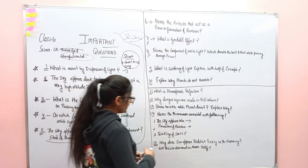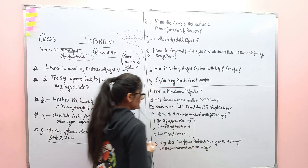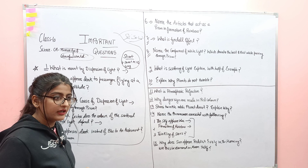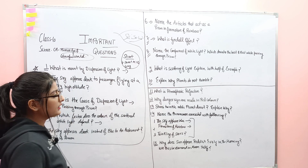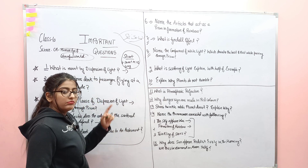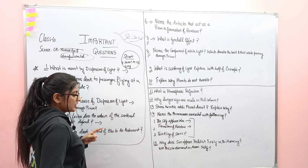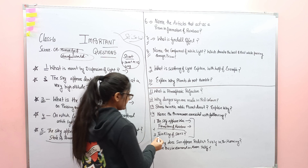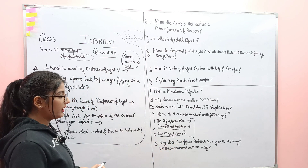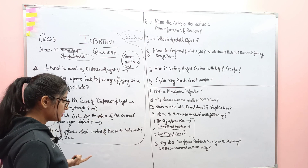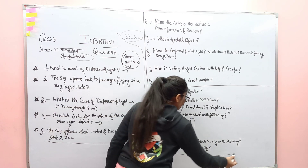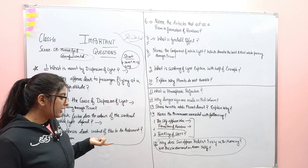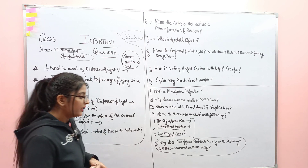Next question is a one-mark type: name the phenomena associated with the following — tell me in the comment section. First: why does the sky appear blue — which phenomenon? Second: formation of a rainbow — what phenomenon causes it? Third: twinkling of stars — what is the phenomenon? Tell me down in the comment section. This is our 14th question. The 15th and last question, also a board examiner favourite, is: why does the sun appear reddish early in the morning, and will this be observed on the moon — justify.